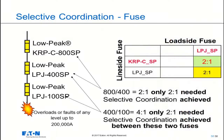Here's another example of three nested fuses with short circuit currents of up to 200,000 amps flowing through all three of these devices. As long as I maintain a minimum of 2 to 1 ratio, I am selectively coordinated. The LPJ-100 would only require a 200 amp upstream, but I have a 400 amp, so I'm better than a 2 to 1 ratio.